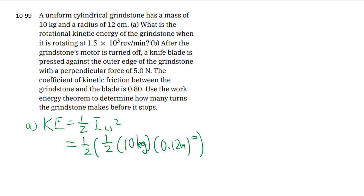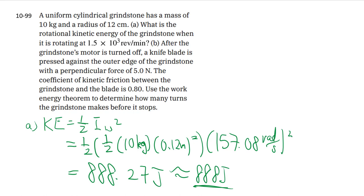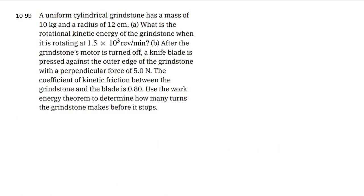We then plug in the numbers — one-half, and then another one-half for MR squared. The radius is converted to meters as well, giving us roughly 888 joules for the rotational kinetic energy of the grindstone.